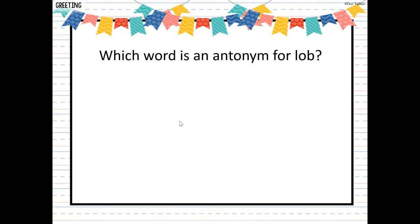Which word is an antonym for lob? Remember, antonym means opposite. Is it to hit, to throw, to catch, or to shake? Which is the antonym for lob? You should say catch. Remember, lob is to throw. So the opposite of throwing would be to catch or to hold it.